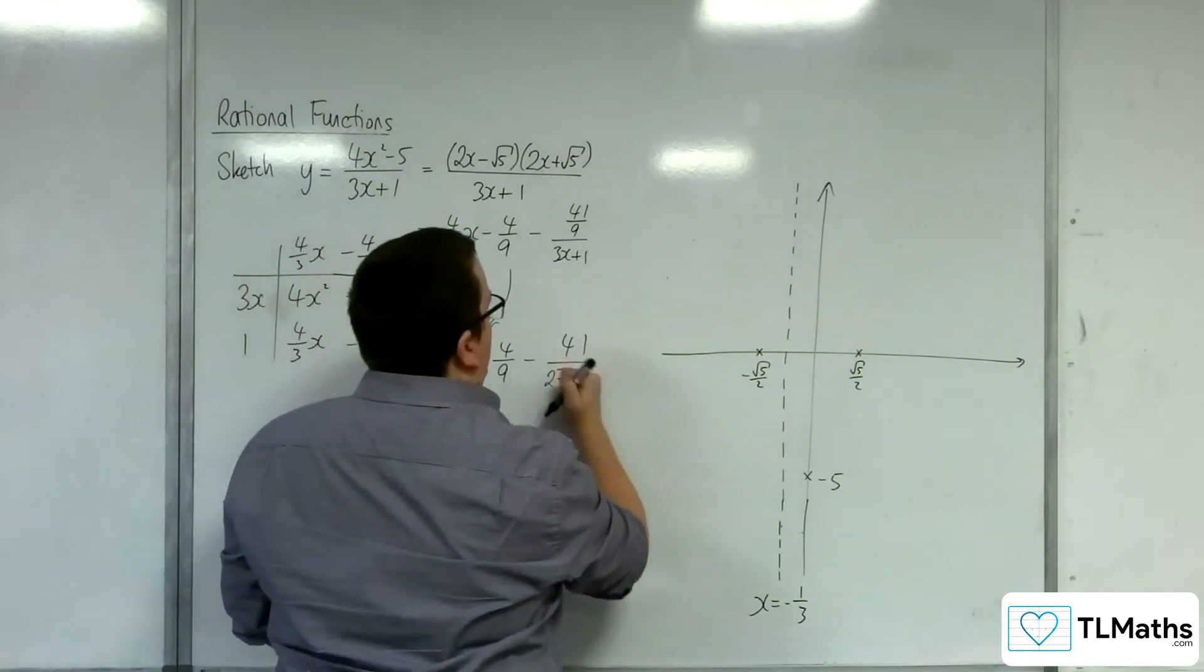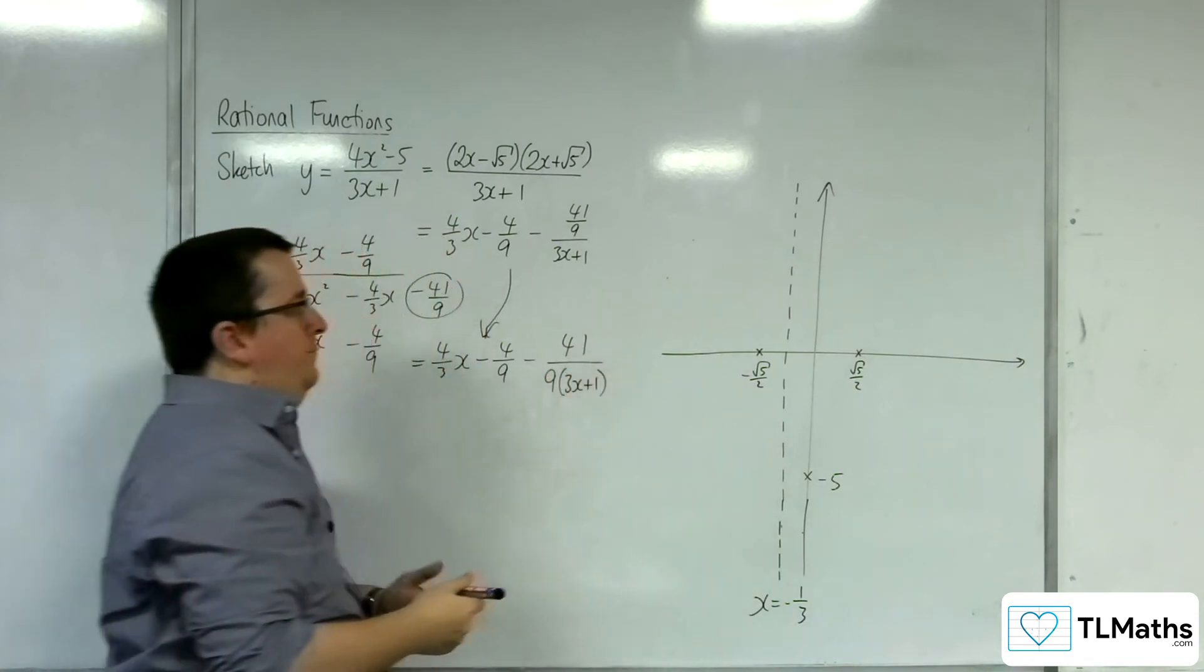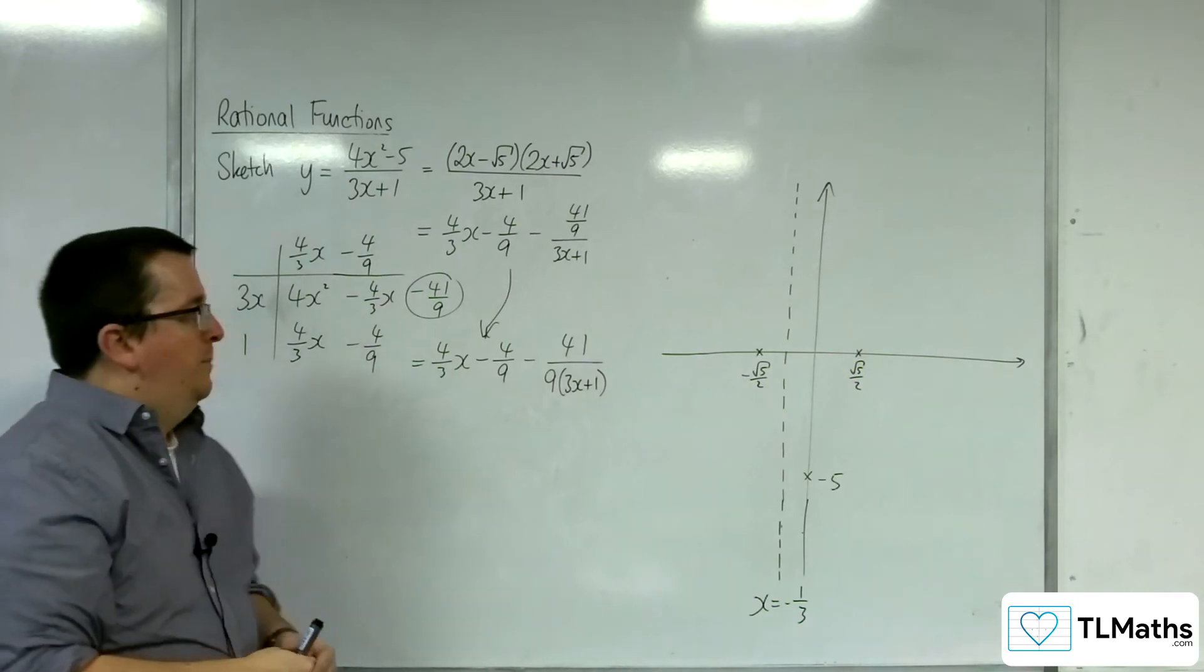Or, you know, you could just have the 9 3x plus 1. Depends what you need.